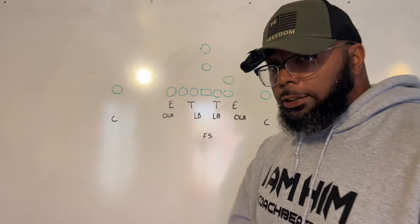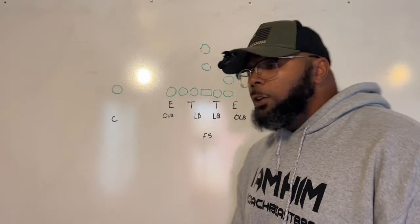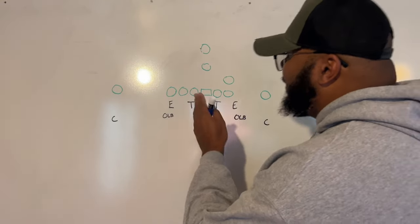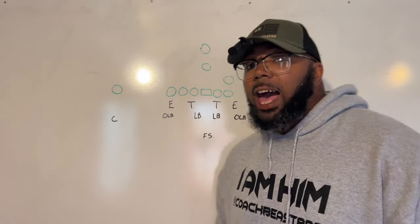Number one thing we want to do is shut down their running game. The way we do this is we're going to attack them with different blitz packages and we're going to disguise our blitzes.